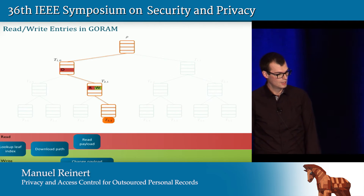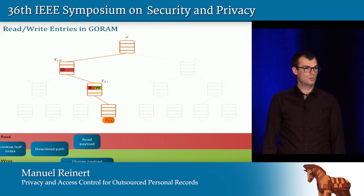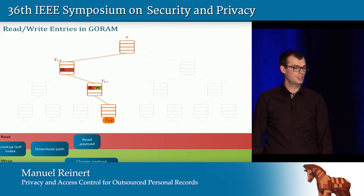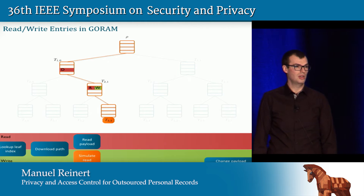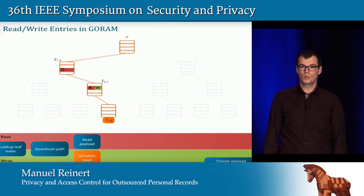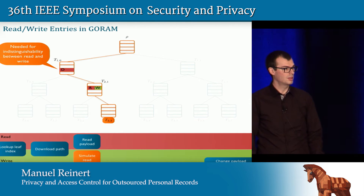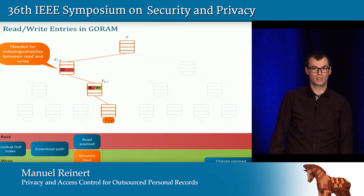How do the algorithms change? Because we have malicious clients, up to the point where we download the path everything stays the same. However, we cannot change the payload right away since clients might be malicious, so we postpone this to the end. Instead, we first simulate the read, distinguishing between the entry we read and the entry we want to write. There is also a dummy entry d, which is needed to make read and write operations indistinguishable, as required by the original definition of obliviousness.